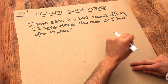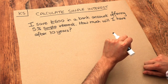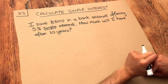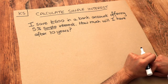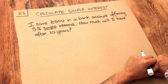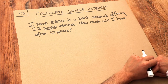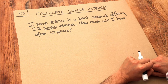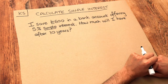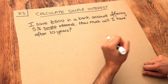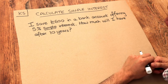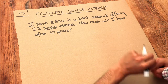Firstly, interest with a bank account is when the bank gives you a certain percentage of what you have on top of what you already have. For example, if I put in £1000 into a bank account and they gave me 5% interest each year, then I get 5% of that £1000, which is £50, so I will then have £1050 after one year.